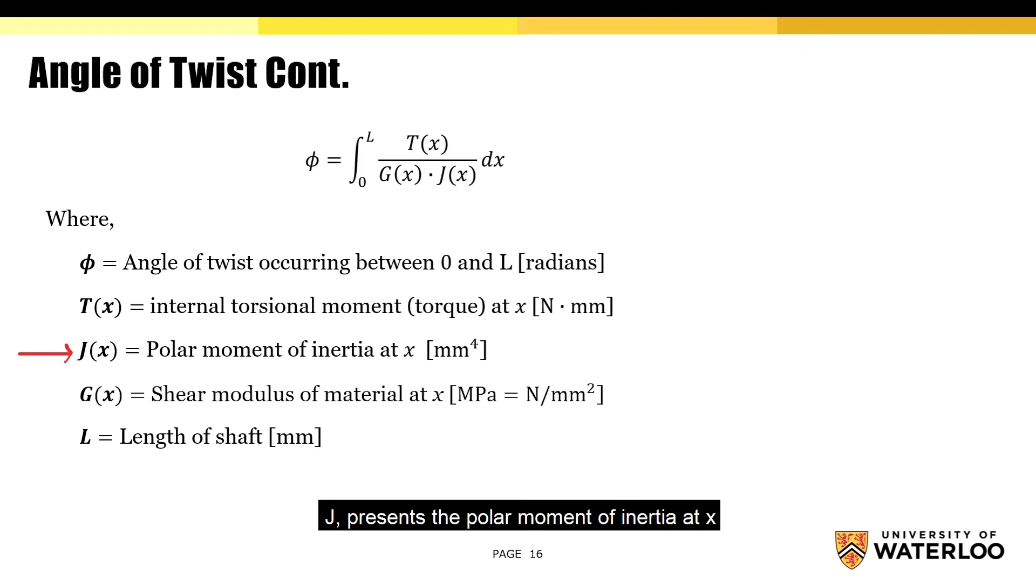J represents the polar moment of inertia at x. The unit for J is millimeters to the power of 4. G represents the shear modulus of the material at x. The unit for G is megapascals or newtons over millimeters squared. And finally, L represents the length of the shaft, and the unit for L is millimeters.